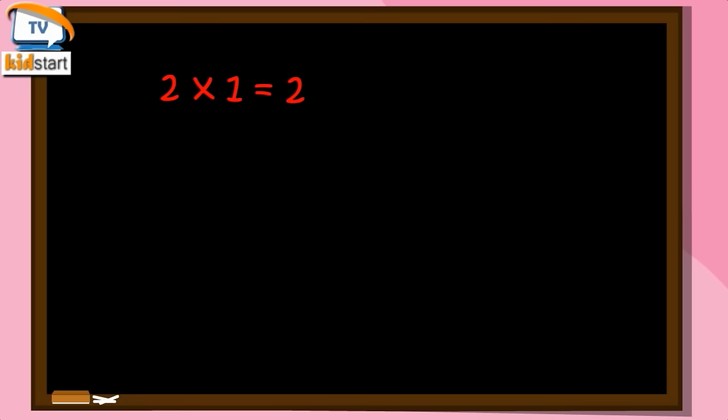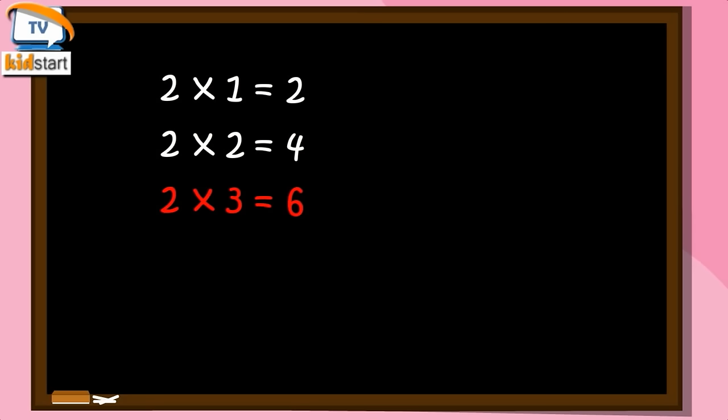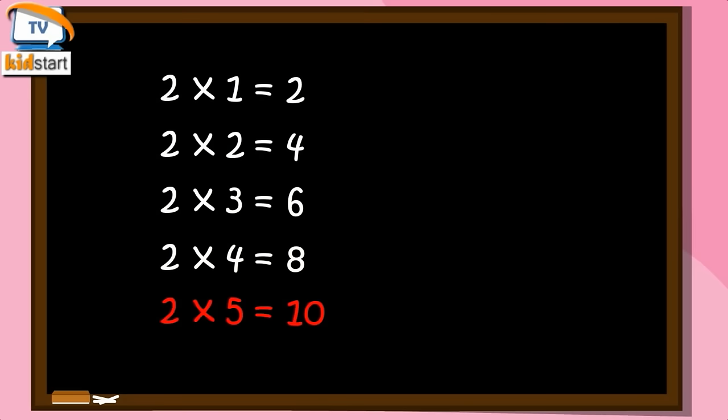Two Ones are Two. Two Twos are Four. Two Threes are Six. Two Fours are Eight. Two Fives are Ten. Two Sixes are Twelve.